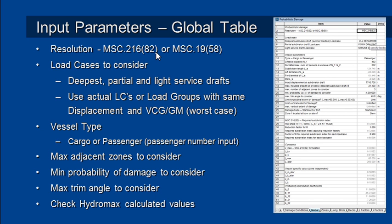Our first decision is which design code we're going to use — Resolution 216 or Resolution 19 — and from those codes we need to define a series of drafts: our deepest, partial, and light service drafts. We can do that in two ways: we can either define regular load cases with loads and tanks, or we can define load groups which don't contain any tanks and fluids but allow us to directly specify the displacement and VCG to produce the required GM for those three draft conditions.